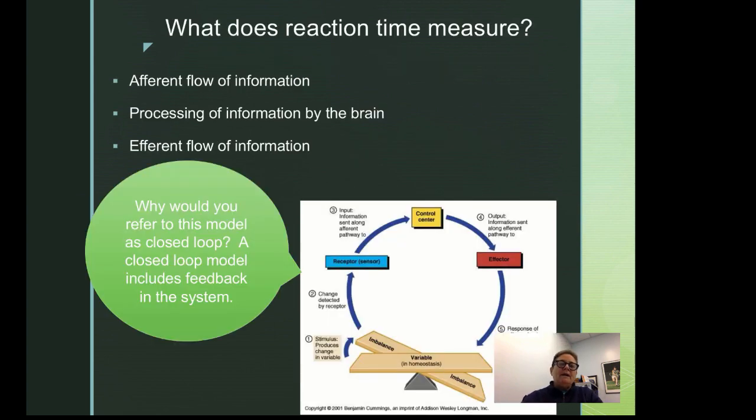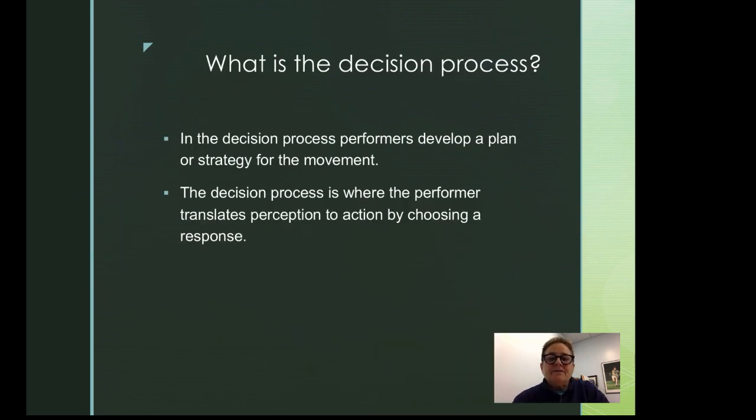So what is the decision process? The decision process is the place where performers actually develop a plan or a strategy for the movement. The decision process is where the performer takes the information from perception and actually chooses a response. This doesn't mean that we are executing the response yet, but rather this is the input side of the model or the middle part of the model where we've gone from the input and the perception of that input to actually making a decision about the response that we're going to make. We call this decision the motor plan.